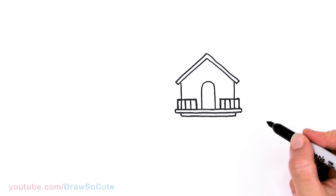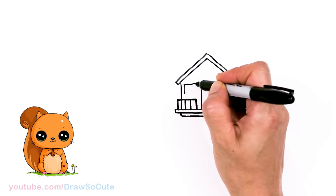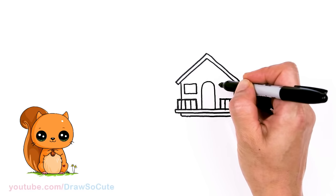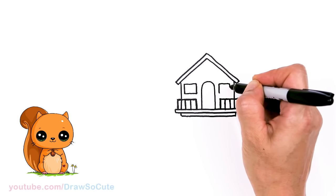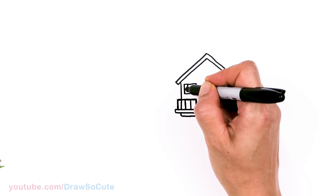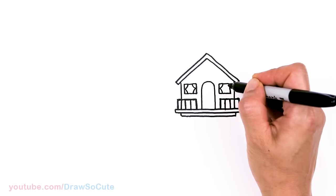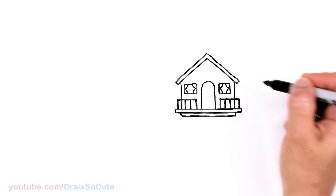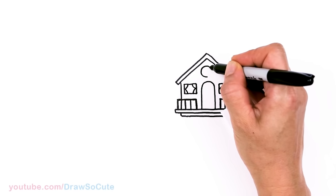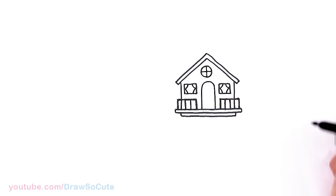Okay, so now that we have that, and then let's come in here and draw some windows. So just draw a rectangle right in here. And same thing over here. Nice and simple. And I'll give it some curtains. So just two curves on each side. And I'm going to put a circle window right here, like a porthole, right? And then add the cross right inside.